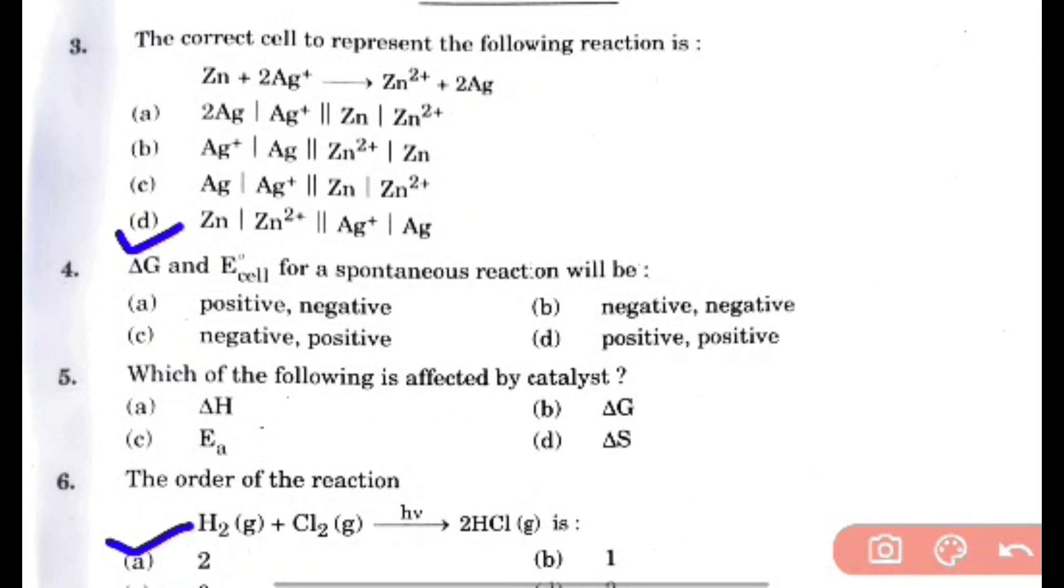For question 4, Delta G and E cell, the formula is Delta G equals minus nFE cell. So this is positive hona padega, tabhi ja ke it negative hona. Option C will be the right answer.